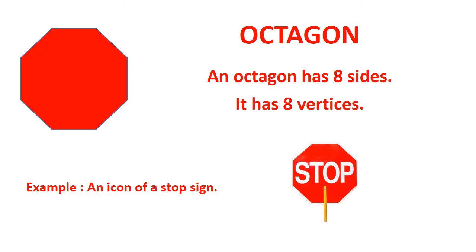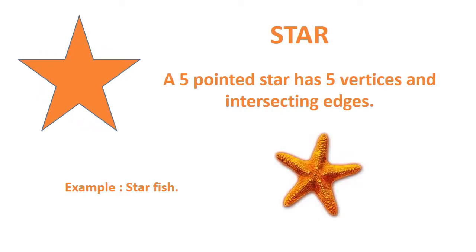Octagon. An octagon has eight sides. It has eight vertices. Example: an icon of a stop sign.